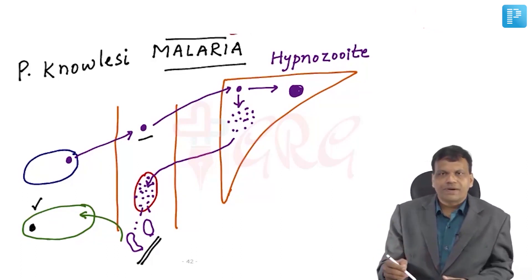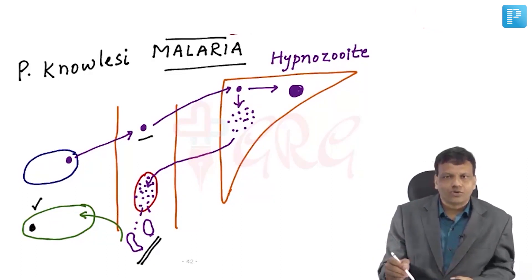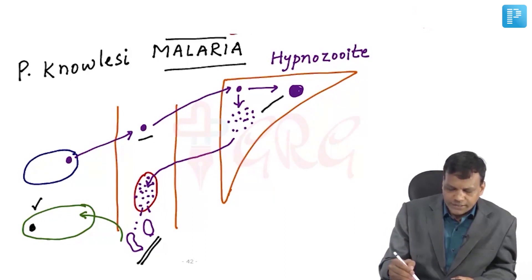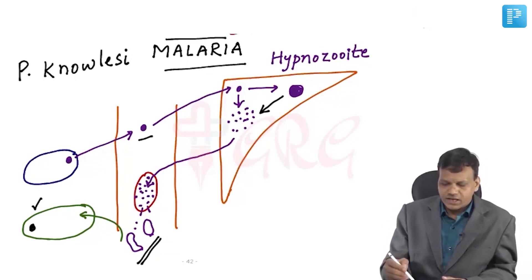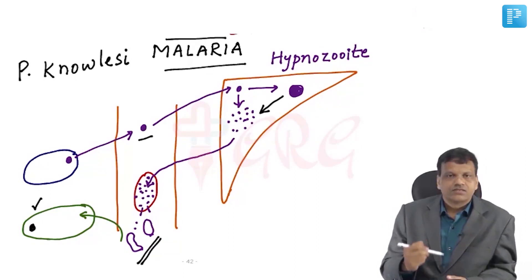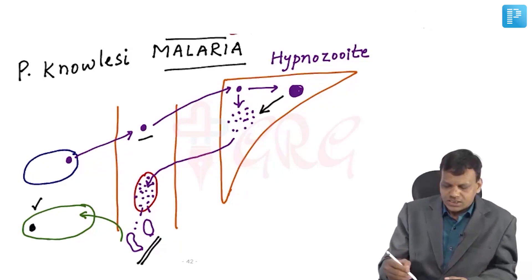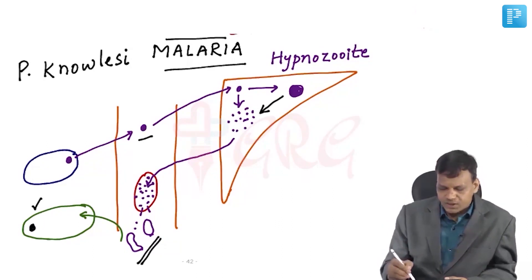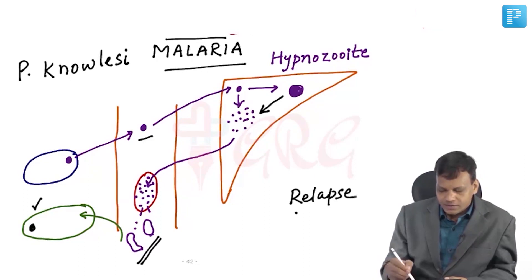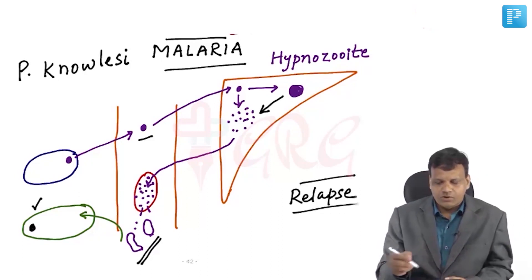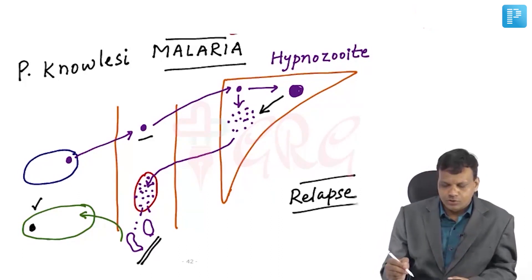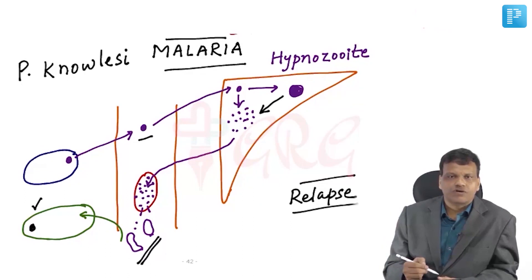What about the sleeping parasite — the hypnozoite? It can wake up at any time, maybe after 2 days, maybe after 10 days. Whenever hypnozoites wake up, they start multiplying and symptoms begin again. So hypnozoites are responsible for the relapse of malaria — when a person becomes afebrile and then develops fever again because of hypnozoites.